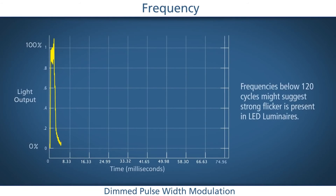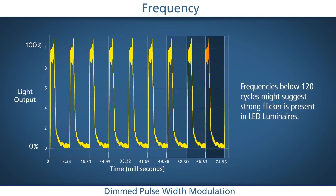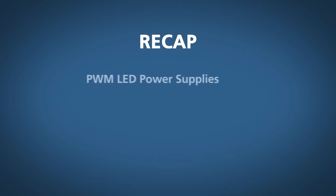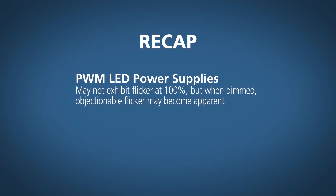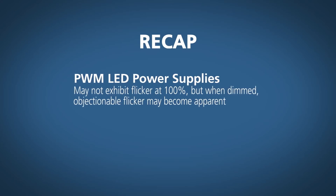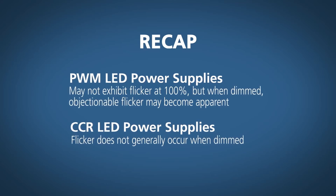Record the frequency of current pulses reaching the LEDs. Research has shown that pulses in the range of 120 cycles per second may be perceived as significant flicker. To summarize: PWM LED power supplies may not exhibit flicker at 100% light output, but when dimmed, objectionable flicker may become apparent. This is generally not the case with CCR LED power supplies.